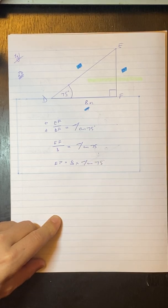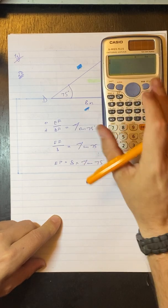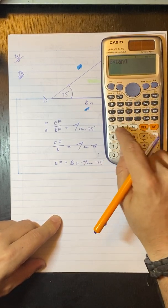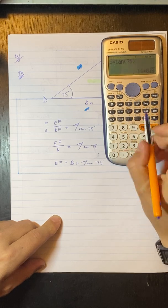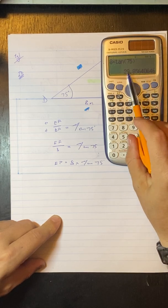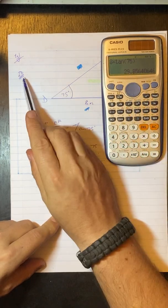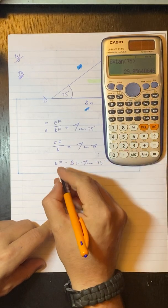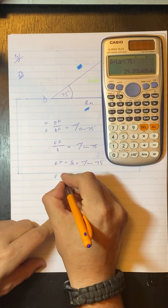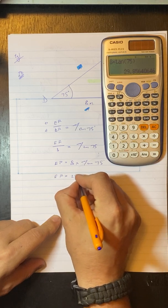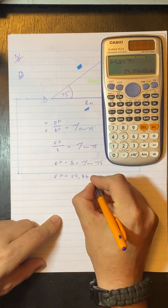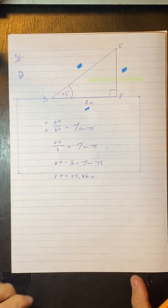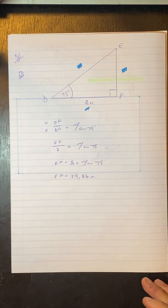Get your calculator and we calculate 8 times tan 75. Rounding this off to two decimal places gives us 29.86. Our units are meters, so the lighthouse is 29.86 meters high.